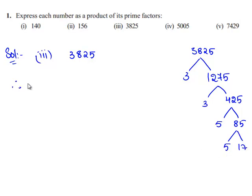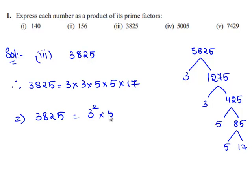Therefore, 3825 is expressed as 3 times 3 times 5 times 5 times 17, which implies 3825 equals 3 squared times 5 squared times 17. Hence, 3825 is expressed as a product of its prime factors.